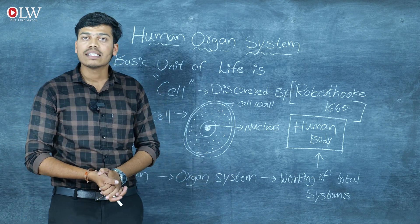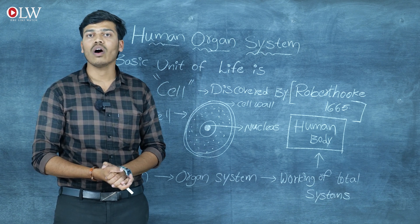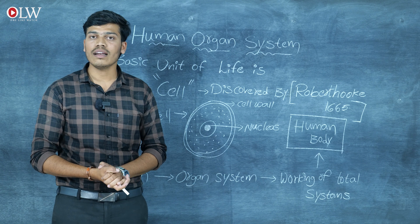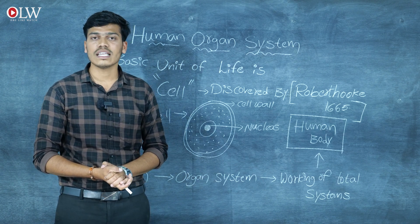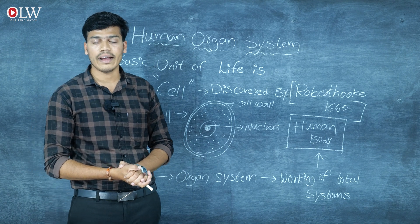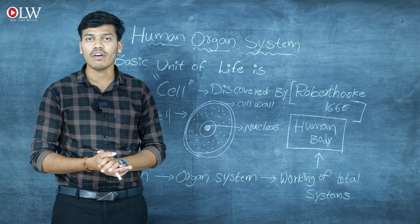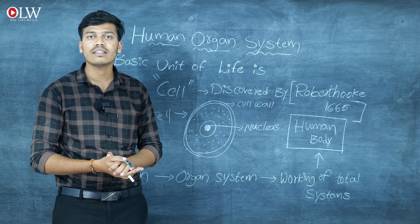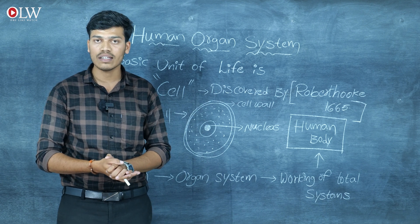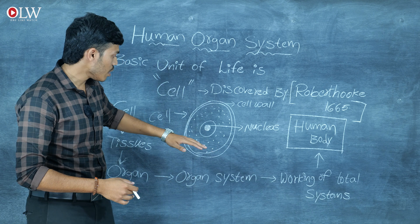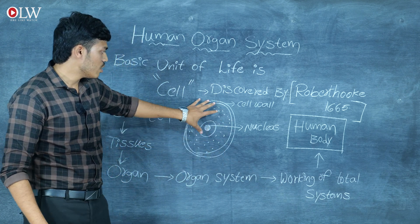The cell is the structural and basic functional unit of all living organisms. It was discovered by Robert Hooke in the year 1665. So the cell is the functional and structural unit of all living organisms, discovered in 1665 by scientist Robert Hooke. Here, let's check the structure of the cell.